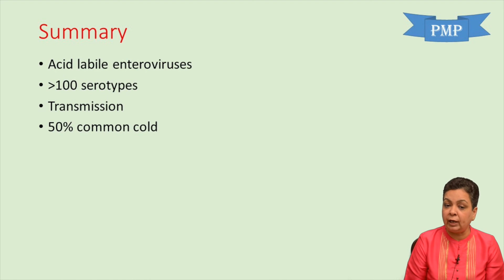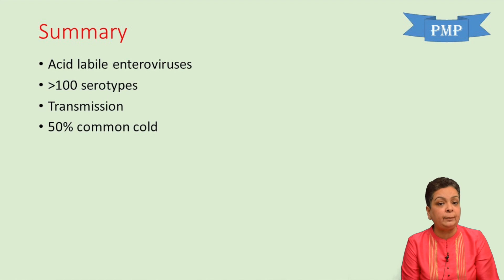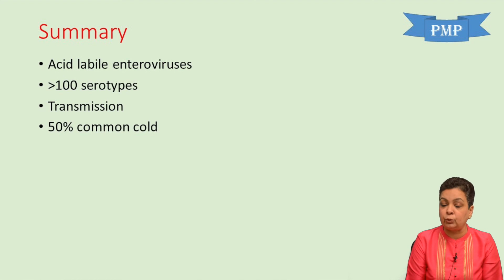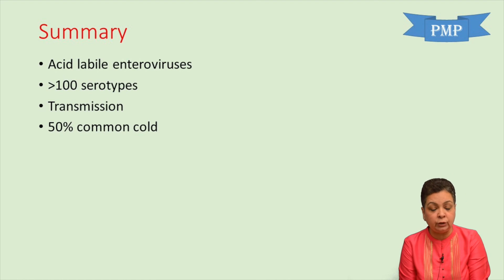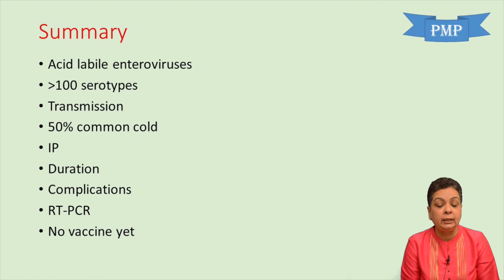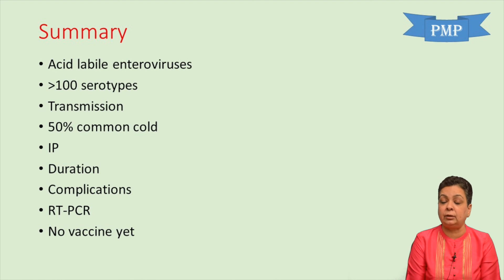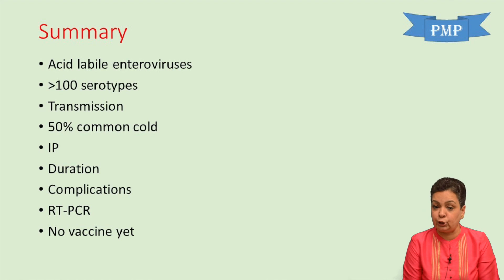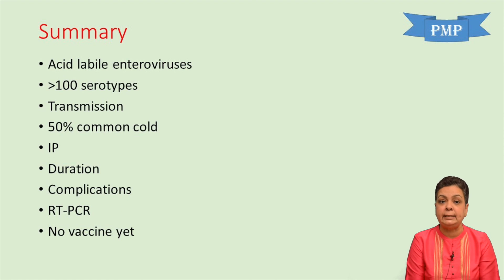To summarize rhinoviruses: they are acid-labile enteroviruses with more than 100 serotypes. Transmission is by aerosols, hand-to-hand contact, or via fomites. They are responsible for 50% of common cold cases. Incubation period is 1–2 days and duration is 4–9 days. Complications include otitis media, sinusitis, bronchitis, bronchopneumonia, and exacerbations of COPD. RT-PCR is the most sensitive diagnostic method, and there is no vaccine yet.